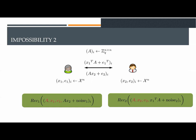For our second result, we consider the case where at least one of the reconciliation functions is noise-ignorant. Namely, it does not depend on the noise of the party. In this case, in the slide, we assume that Alice's reconciliation function is noise-ignorant. Namely, it does not depend on e1.